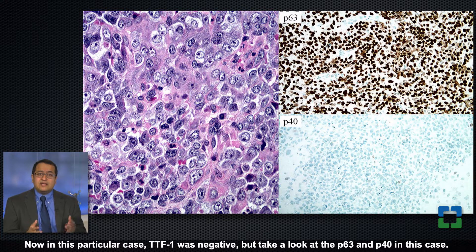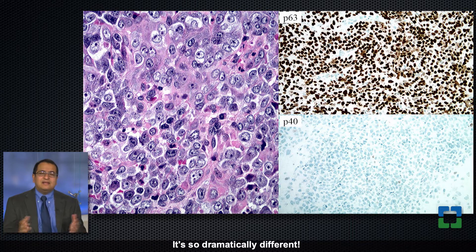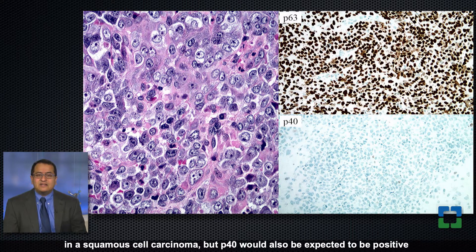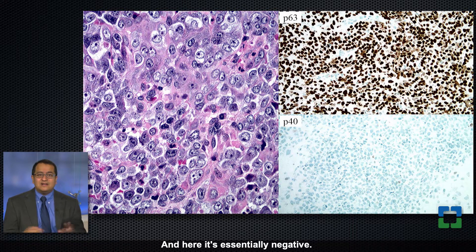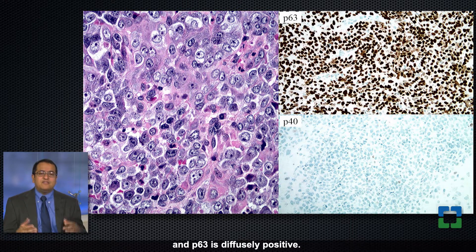In this particular case TTF1 was negative, but look at p63 and p40 — it's so dramatically different. The p63 shows strong and diffuse nuclear positivity of the kind you would expect in a squamous cell carcinoma, but p40 would also be expected to be positive in squamous cell carcinoma, and here it's essentially negative. Maybe you can find a rare positive cell, but essentially p40 is negative and p63 is diffusely positive.